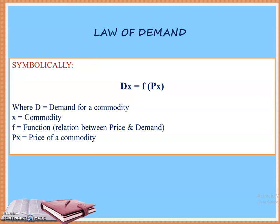If you want to describe this relationship symbolically, then D is equal to function of P. D stands for demand for a commodity X — X is the commodity, it can be anything. F is the function, which describes the relation between the two variables — price and demand. One is dependent, the other is independent. P stands for the price of a commodity. So symbolically, D is equal to function of P.